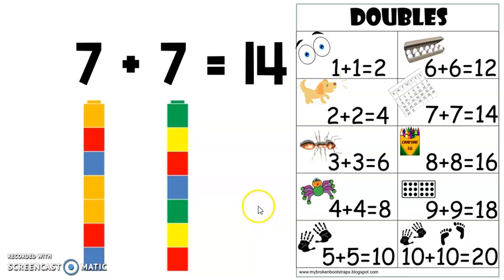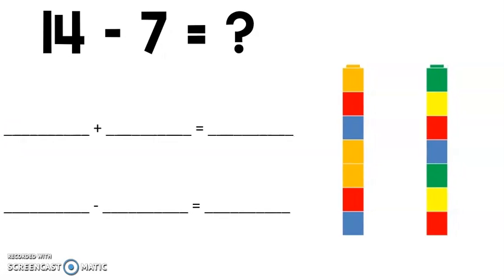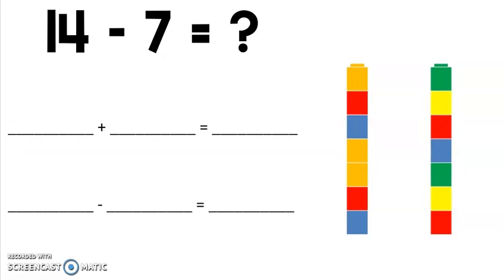Now we're going to use this doubles fact, this equation, to solve a subtraction problem. Are you ready? All right. Here's my question. It says find 14 minus 7. What does that equal?